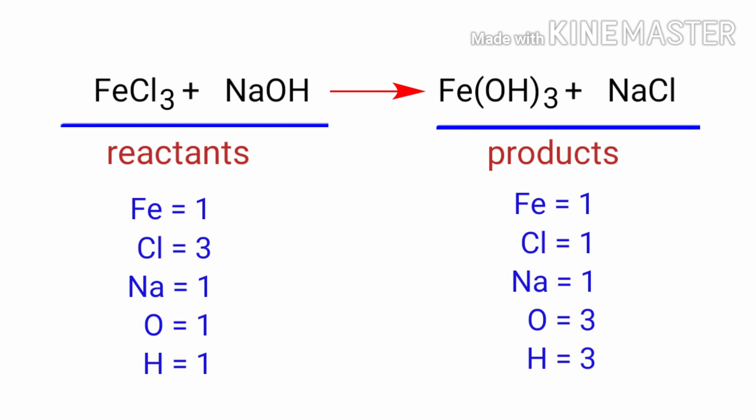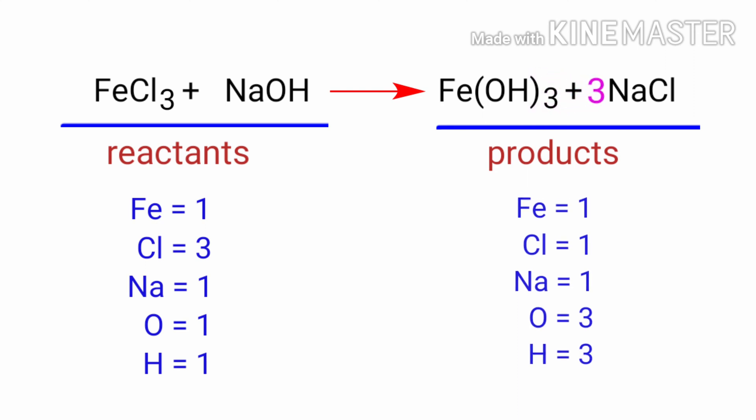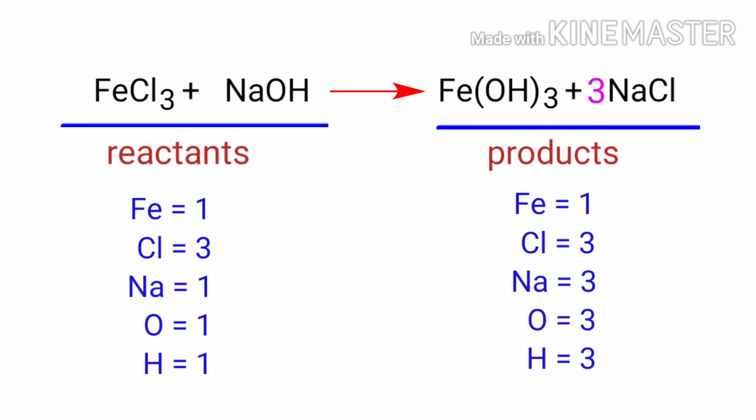To balance the chemical equation, we need to make use of coefficients. A coefficient is a number that we place in front of a chemical formula. In this equation, we need to balance the Chlorine atoms first. To do this, we need to put a coefficient of three in front of NaCl. The Chlorine atoms are now balanced.